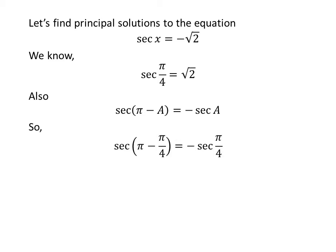Applying the above identity, secant of pi minus pi upon 4 is equal to minus secant of pi upon 4. Since pi minus pi upon 4 is equal to 3 times pi upon 4, and plugging in the value of secant of pi upon 4, we get secant of 3 times pi upon 4 is equal to minus square root of 2.